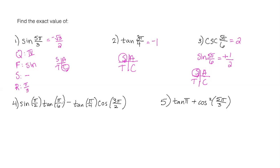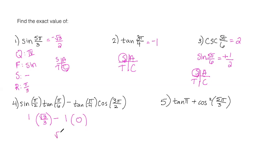For number four, this is a long expression so I'll look at each piece individually. Sine of pi over two comes from the unit circle — at pi over two, the y value is one. Tan of pi over six is on our chart: that's root three over three. Tan of pi over four is also on that chart: equal to one. Cosine of three pi over two comes from the x value on the unit circle where the angle is three pi over two, so that's zero. My answer here is just root three over three.